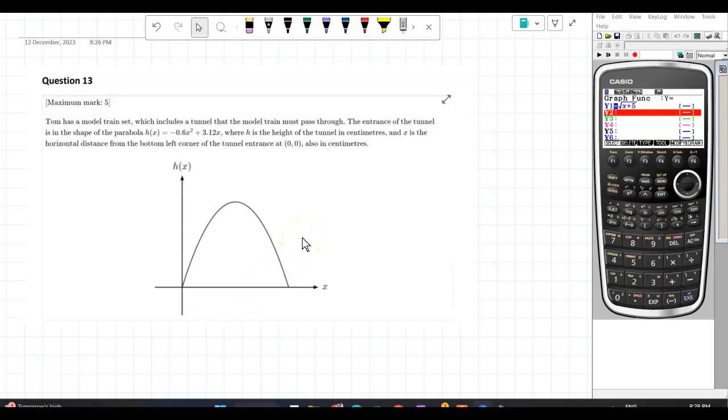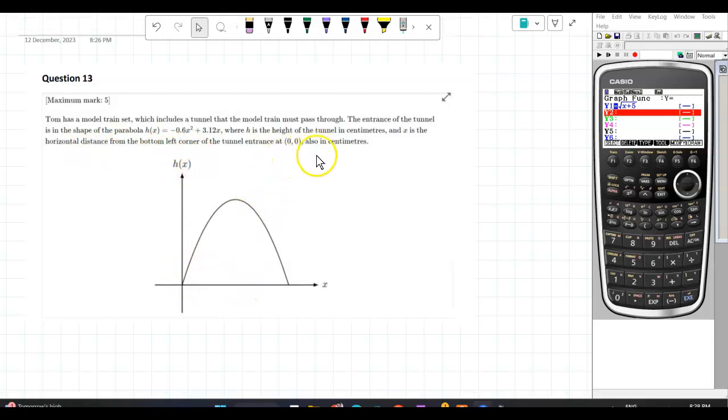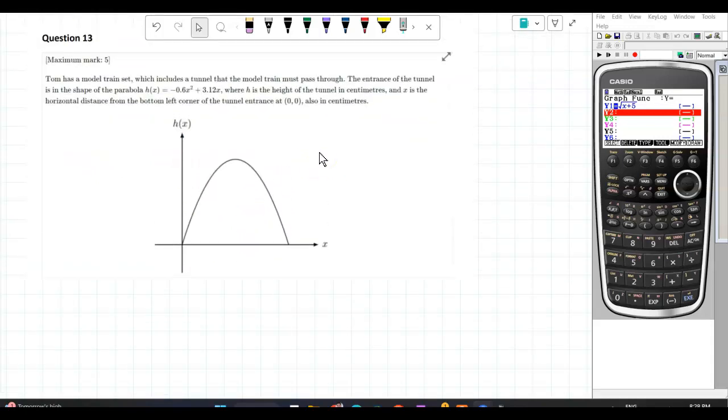Okay, next. Tom has a model train set which includes a tunnel that a model passes through. The entrance of the tunnel is the shape of a parabola which is given: h equals minus 0.6x squared plus 3.12x, where h is the height of the tunnel in centimeters and x is the horizontal distance from the bottom left hand corner. What you can do is you can graph this.